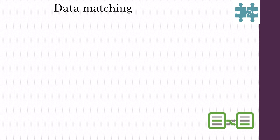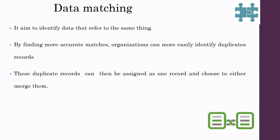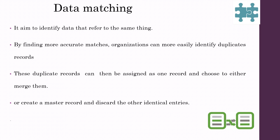Data matching is considered the most important function after profiling, cleansing, and standardizing activities. It aims to identify data that refers to the same thing. By finding more accurate matches, organizations can more easily identify duplicate records. These duplicate records can then be assigned as one record — either merged, or a master record can be created and the other identical entries discarded. Data matching also identifies possible matches across different entities.